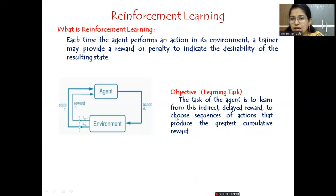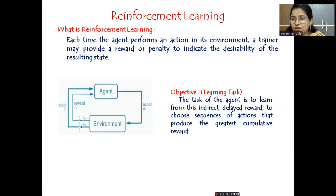From this reward or penalty, the agent has to choose sequences of actions that produce the greatest cumulative reward. For example, if performing action a1 results in a penalty, the agent should avoid it. If action a2 gives a reward, it should be considered. Similarly for action a4 — the cumulative reward should be maximized while reaching towards the goal.